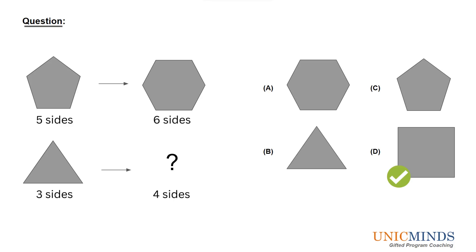So three should be added by one. You have a three-sided triangle, which is number three, so three will become four. When five became six, three will become four.